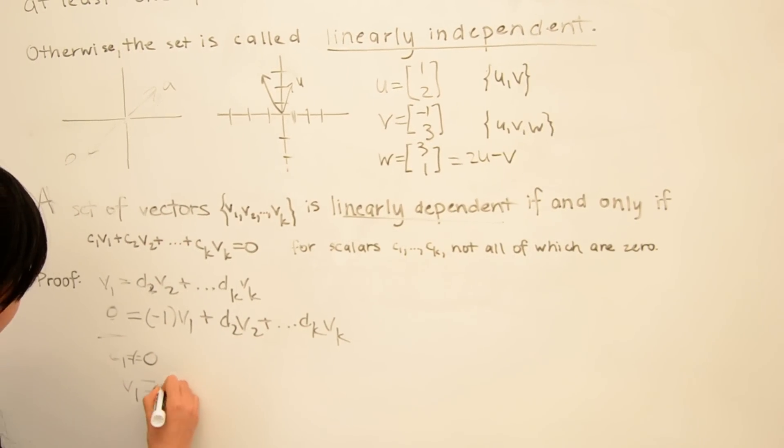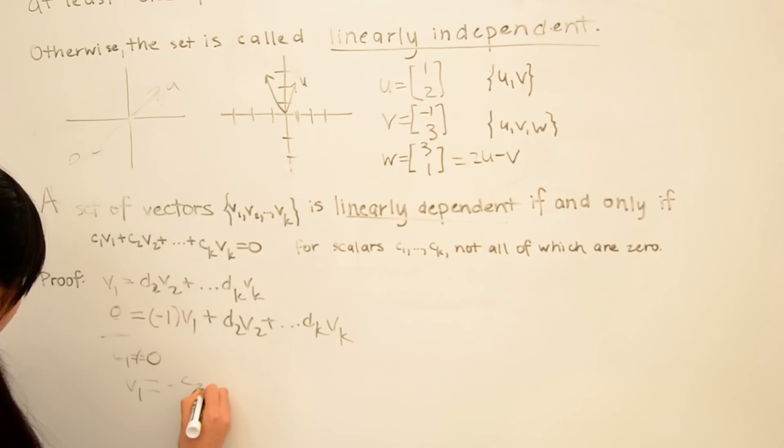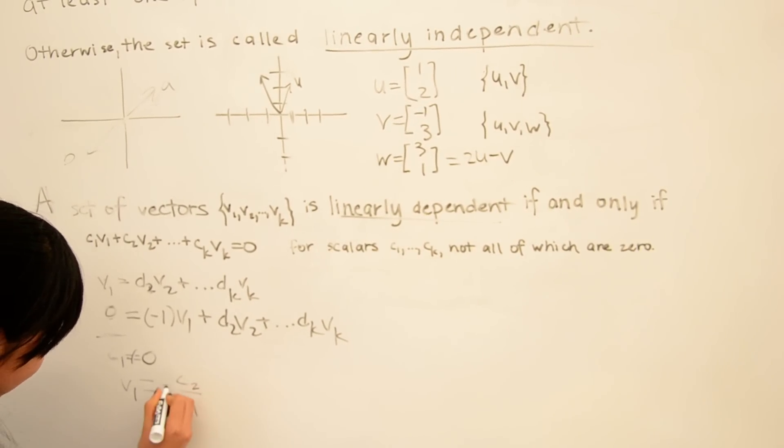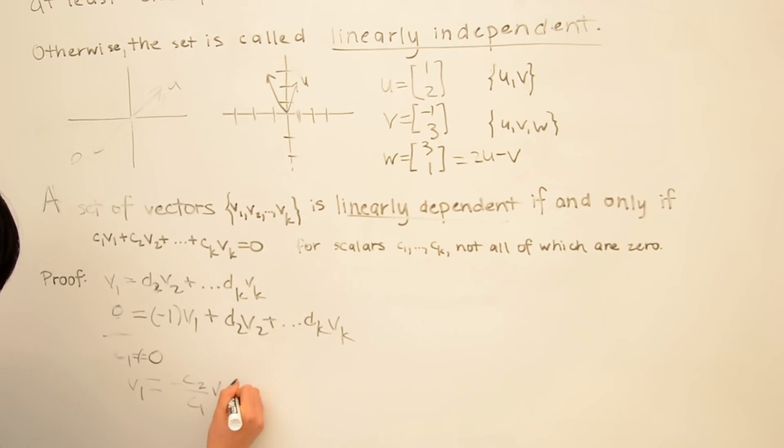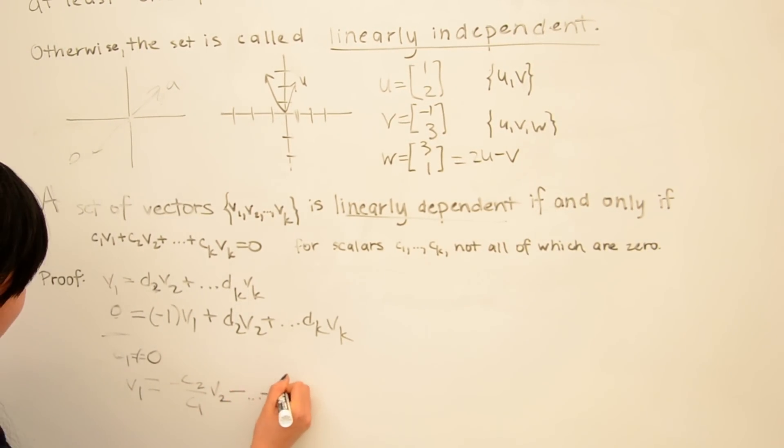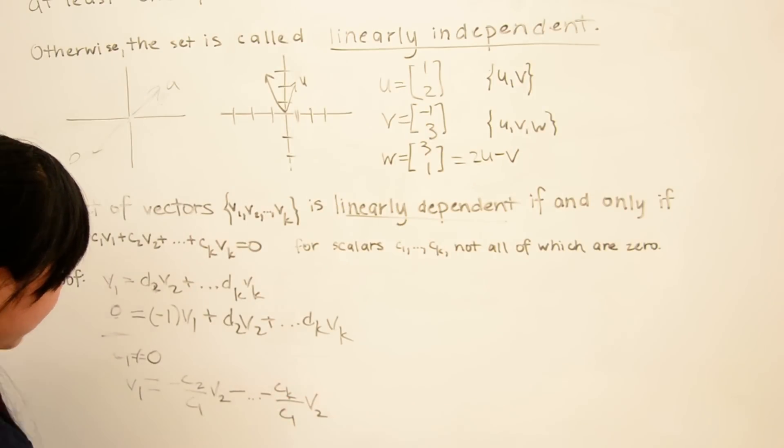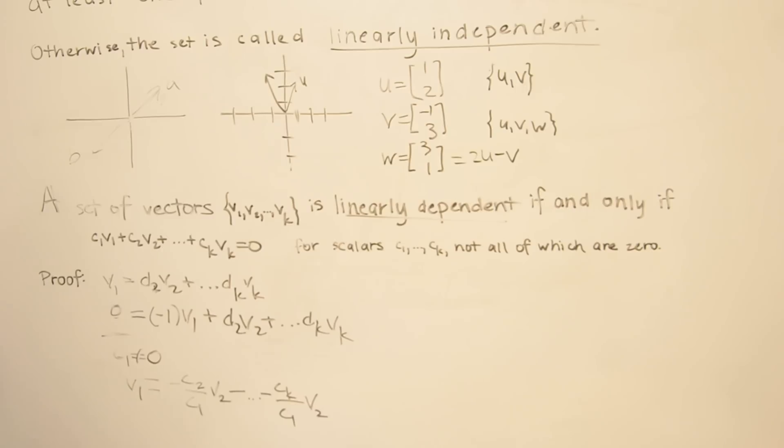So we have v1 equals negative c2 over c1 times v2 minus all terms, and they're all divided by c1, which is valid because we assume that c1 is not equal to 0. And so now we've written v1 as a linear combination of all the other vectors.